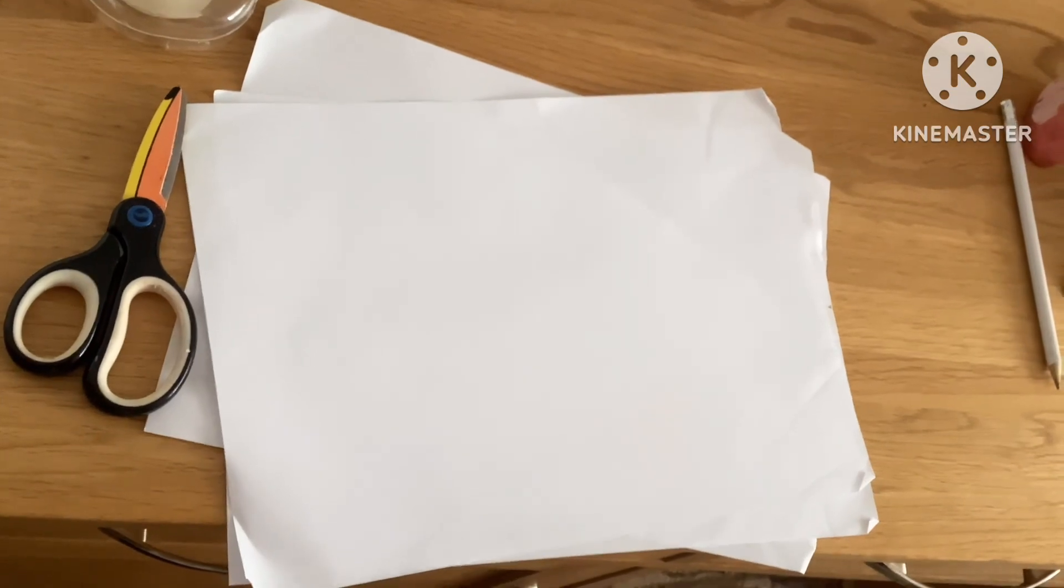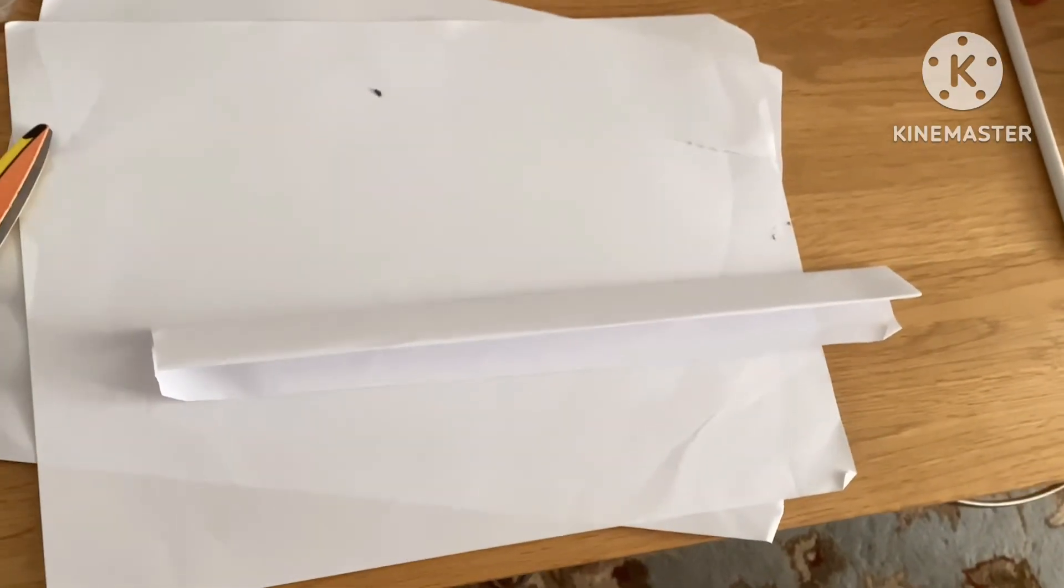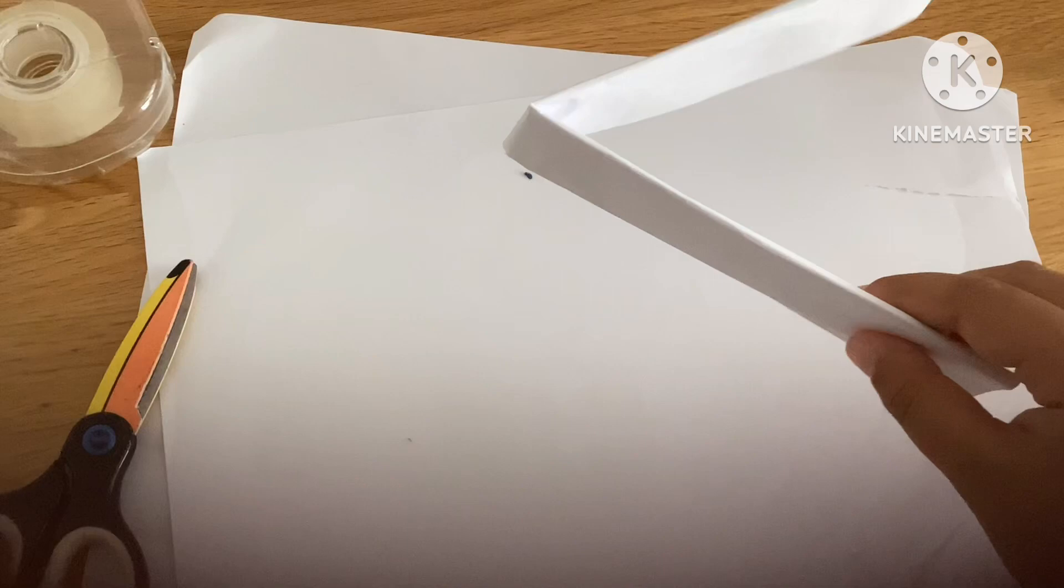You're going to need to fold one sheet of paper into a square. Then you need to fold it in half. Done that. Your paper should look like this, a triangle.